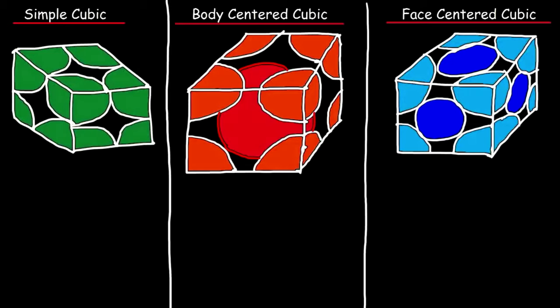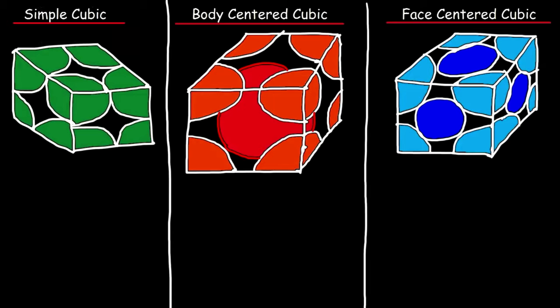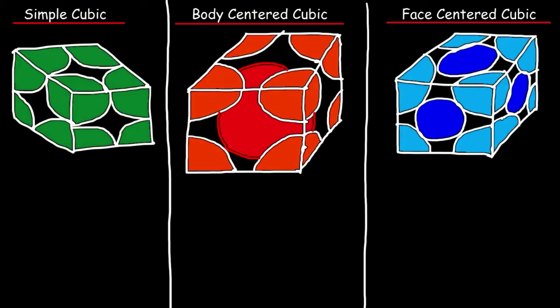In this video I'm going to give you a basic introduction into unit cells. There are three structures you need to be familiar with. The first one on the left is the simple cubic structure. The second one in the middle is the body centered cubic structure, and the last one is the face centered cubic structure.